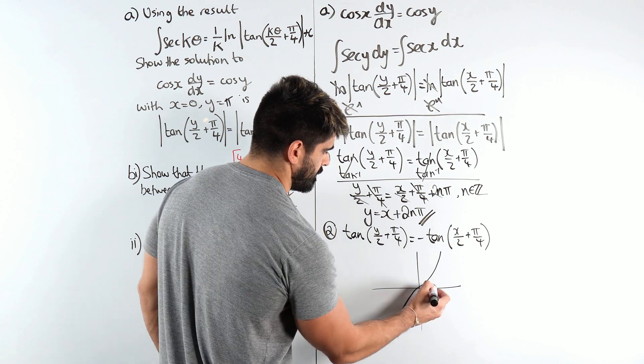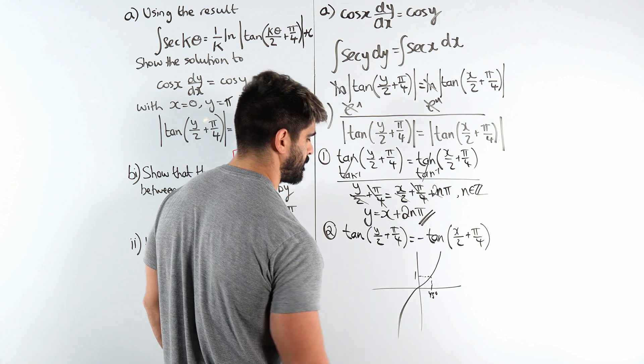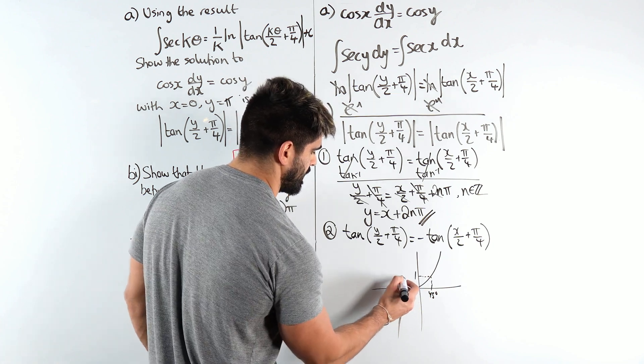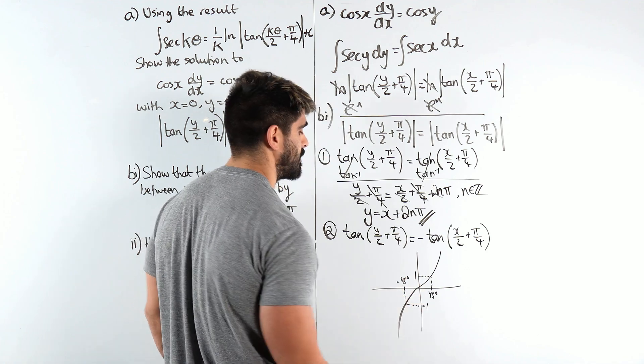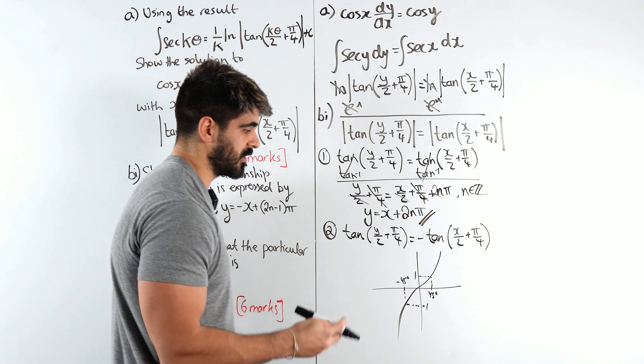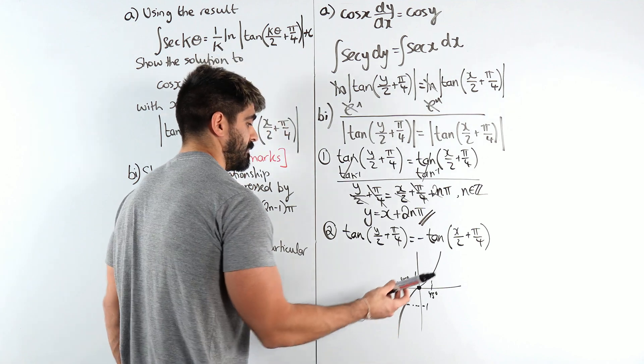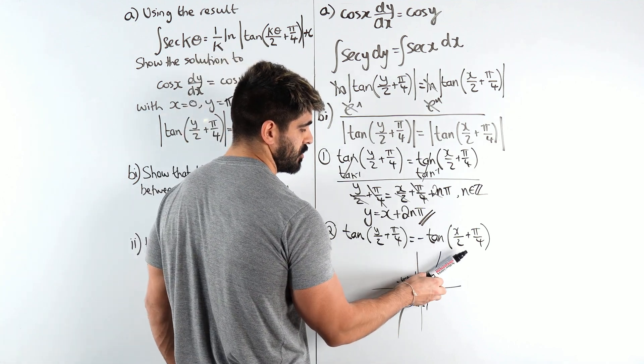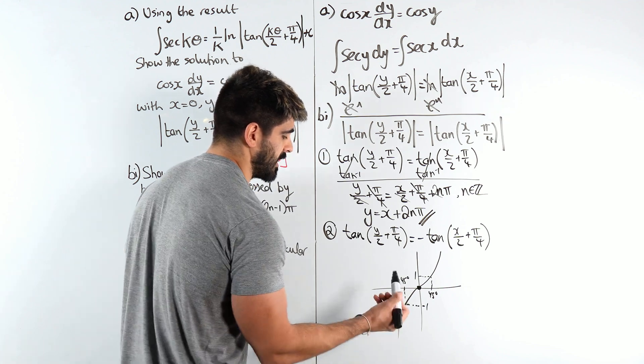Here's my tan graph. But say we have 45 degrees it's just easier to explain with degrees. And here's minus 45 degrees. Now tan of minus 45 degrees is minus 1. So it's known as an odd function because if you take the positive version of tan and you rotate it 180 degrees you get the negative version.